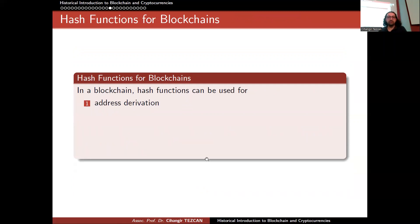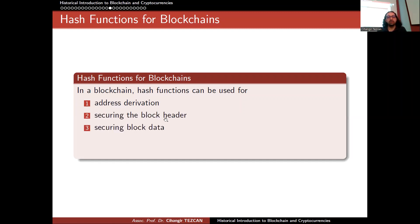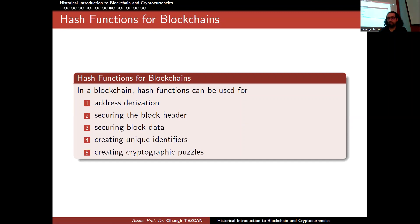Hash functions are used in blockchains for many reasons. Some of them include address derivation, securing the block header, securing block data, creating unique identifiers, and creating cryptographic puzzles. Hash functions are used for many, many reasons in blockchains.